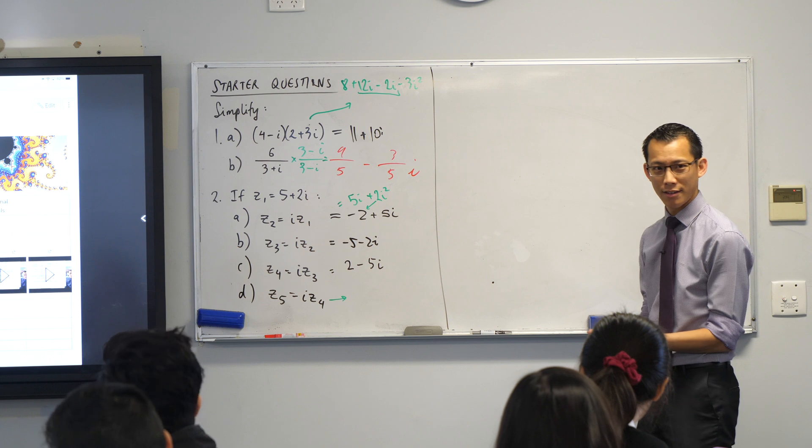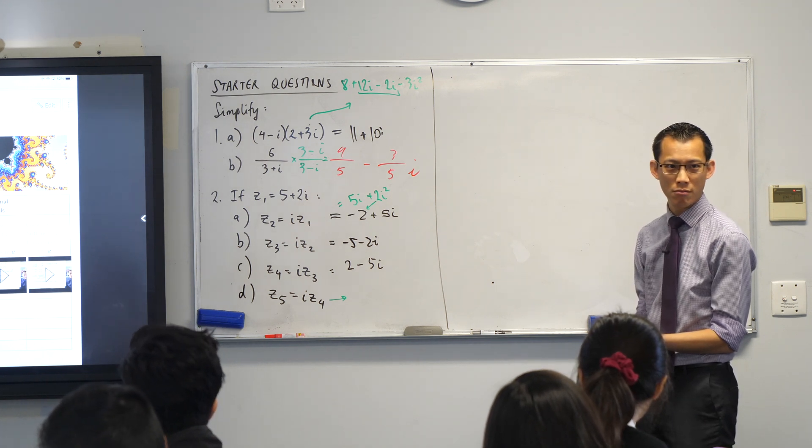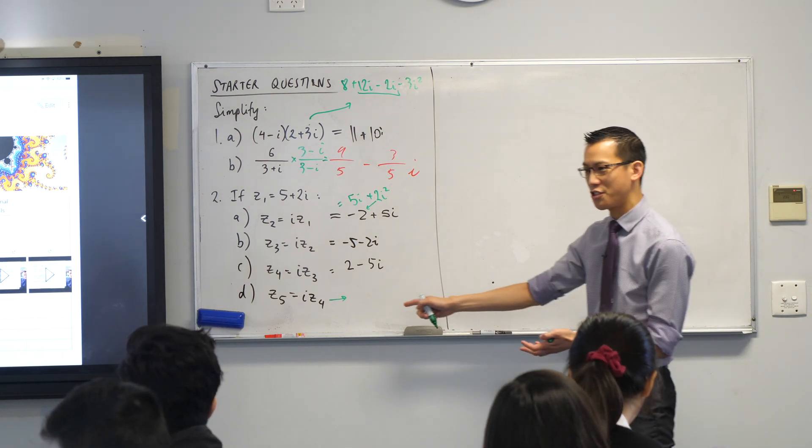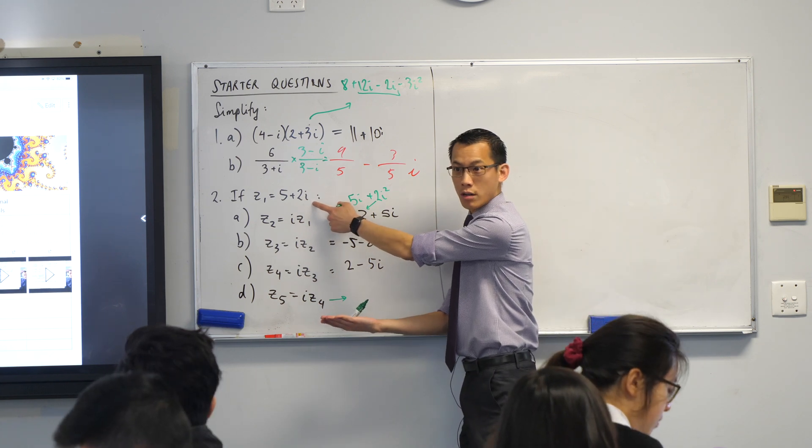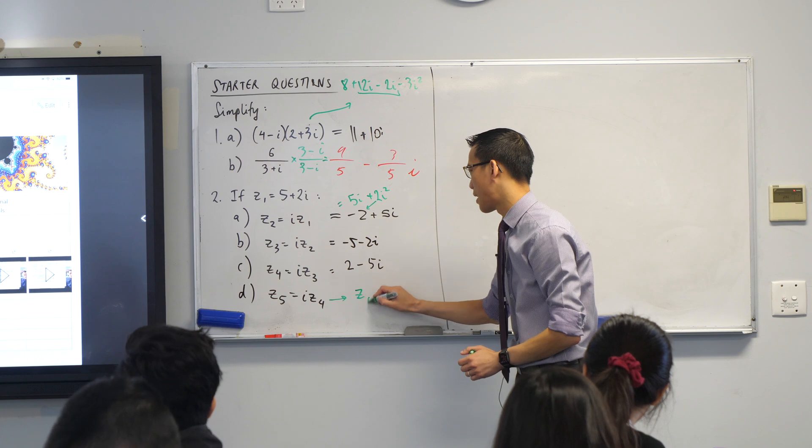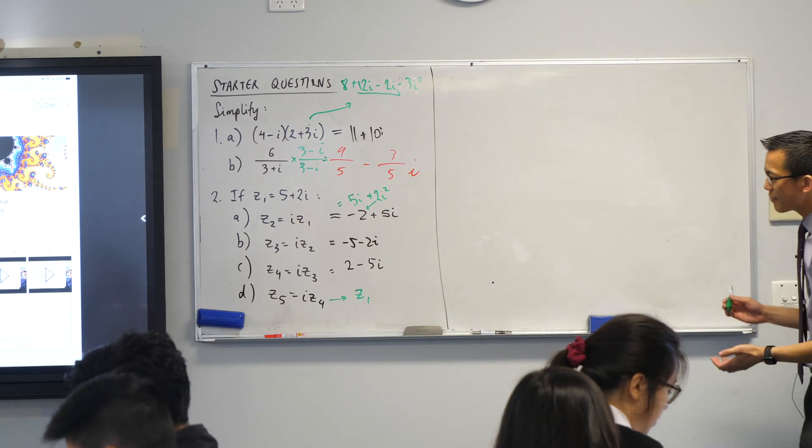What do you get when you simplify this guy? Because you don't even need to write down 5 or 2. This looks familiar, doesn't it? What answer did you get? Did you get 2i plus 5? You got z1, in other words. So I'm just going to leave that there as our answer.